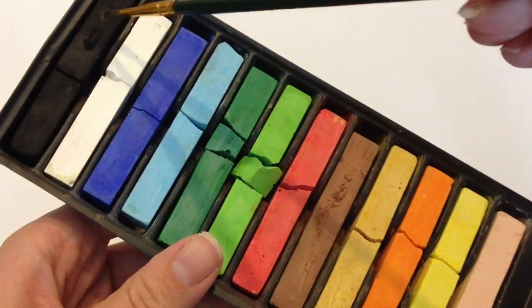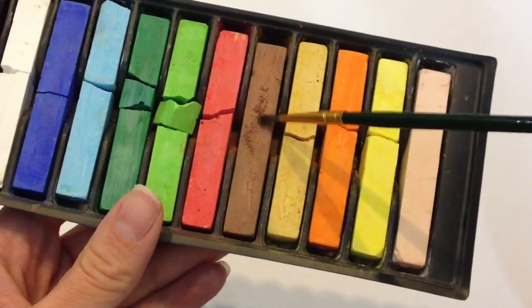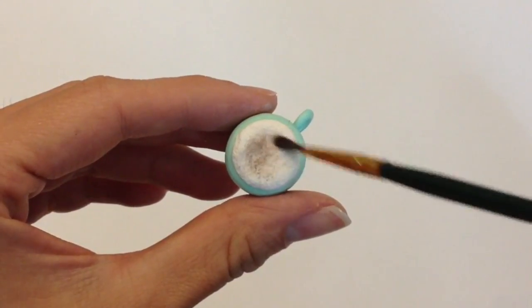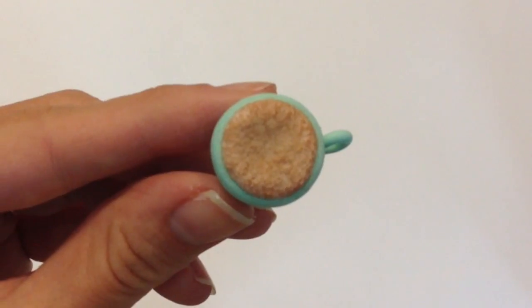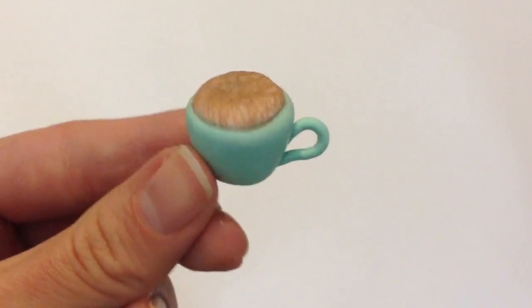Now taking some chalk pastels, I'm taking a dark brown, a little hint of black, and mixing it together to color the foam into a nice brown shade. It kind of looks delicious, doesn't it?